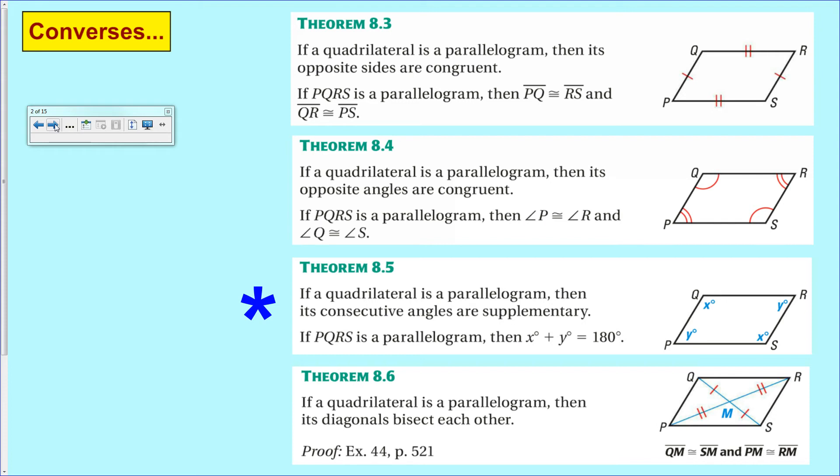We also said that once you have a parallelogram you have all these properties about it. Opposing sides are equal, opposing angles are equal, consecutive interior angles are supplementary, and diagonals bisect each other.